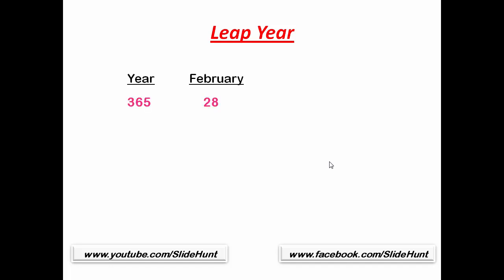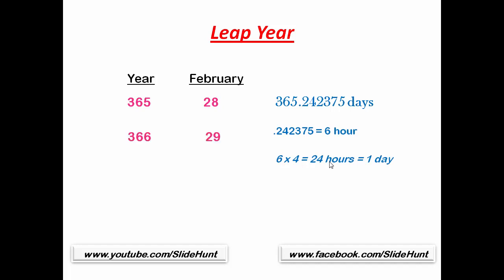First, you have to know what is a leap year. In general, a year has 365 days and February has 28 days. But the exact number is 365.242375 days. We don't consider the numbers after the decimal point — 0.242375 is nearly equal to 6 hours. So in each year we lose 6 hours. In 4 years, we lose 6 times 4 equal to 24 hours, or 1 day. So to balance the calendar year, for every 4 years we add an extra day to the month of February. So February will have 29 days and the year will have 366 days. This is called a leap year.